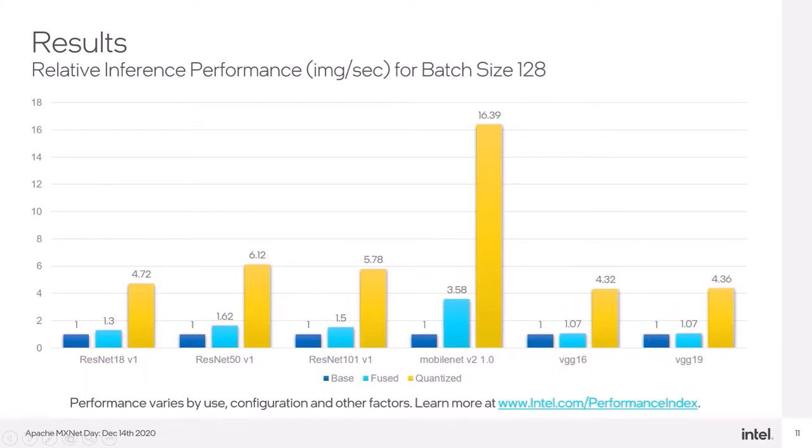Here we present the result of performance improvements for some computer vision models. We can see that the popular ResNet-50 gains about 62% speedup with just operator fusion and it is more than 6 times faster than the base while quantized. All these quantization speedups are achieved with negligible accuracy drops, which will be shown in the next slide.